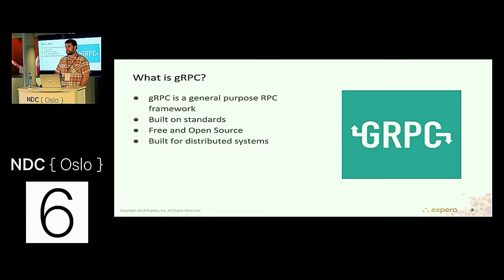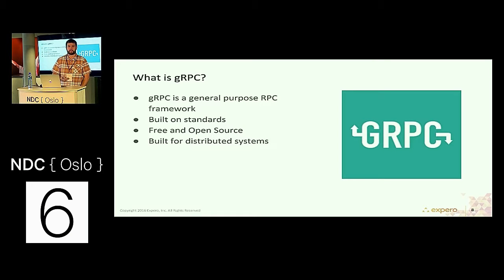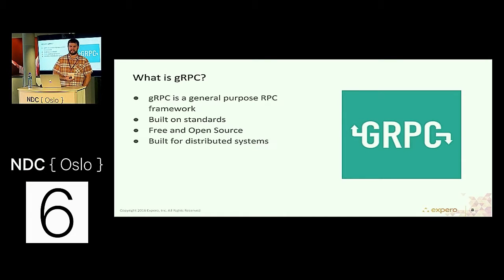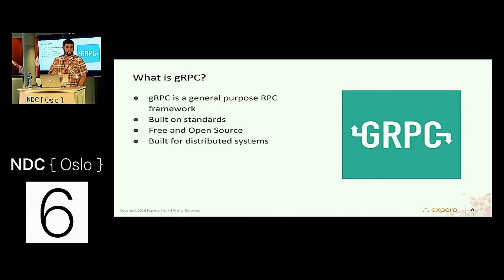gRPC is based on the HTTP/2 protocol for its transport, so it's available across any common network infrastructure, which includes many mobile devices. It's free and open-source, and it's built specifically for the problems of distributed systems. If you've ever worked in highly distributed systems, you've probably encountered the fallacies of distributed systems — things like networks are always available, there's zero latency, bandwidth is infinite. gRPC is built to handle some of those sort of architectural challenges.